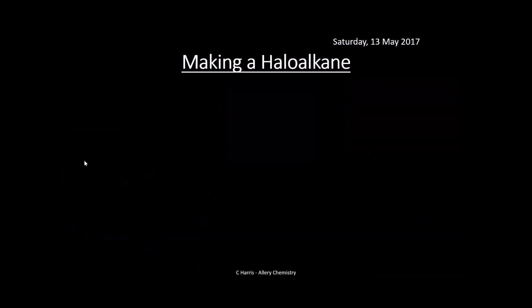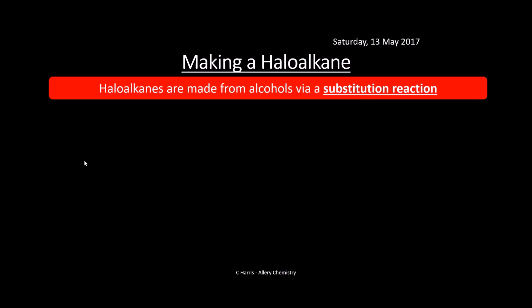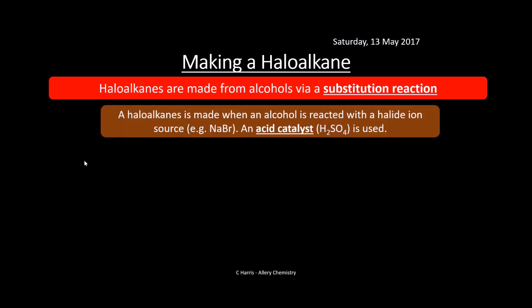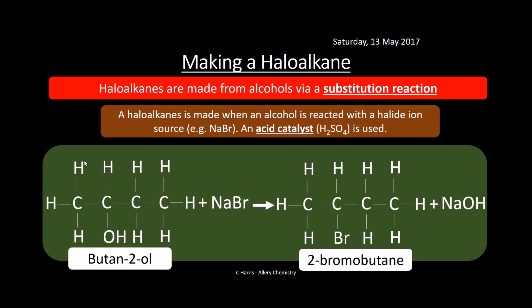Haloalkanes (also known as halogenoalkanes) can be made from alcohols via a substitution reaction. They're made when an alcohol is reacted with a halide ion source — for example sodium bromide — with sulfuric acid as an acid catalyst. For example, butane-2-ol reacted with sodium bromide forms 2-bromobutane. The OH is simply swapped for the halogen, and sodium hydroxide is also formed — so the pH becomes more alkaline.